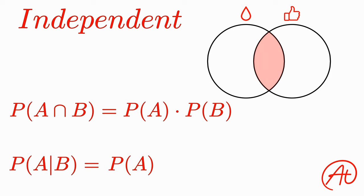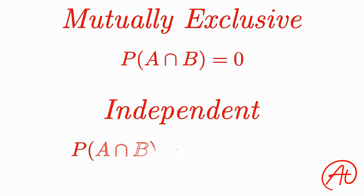Now, if you take one thing from this video, remember that for mutually exclusive events, the probability of A and B occurring together is zero. And for independent events, the probability of A and B occurring together is the probability of A times the probability of B.